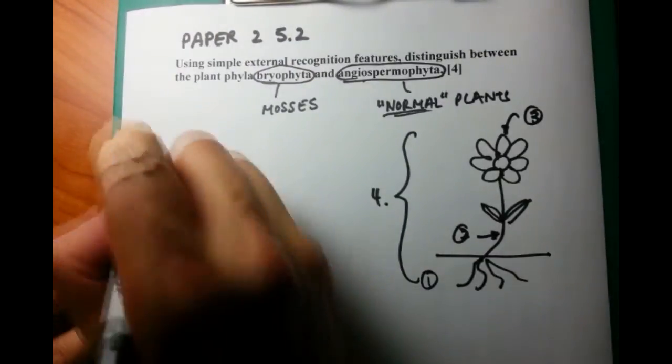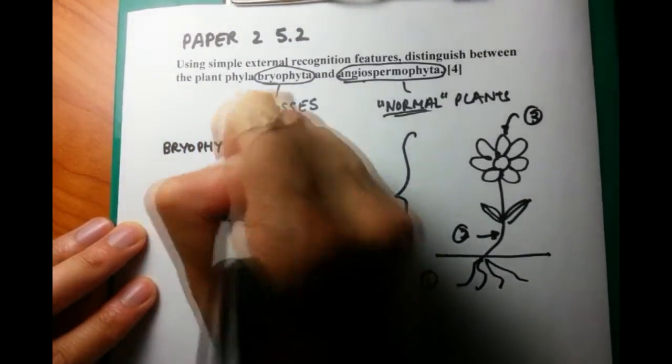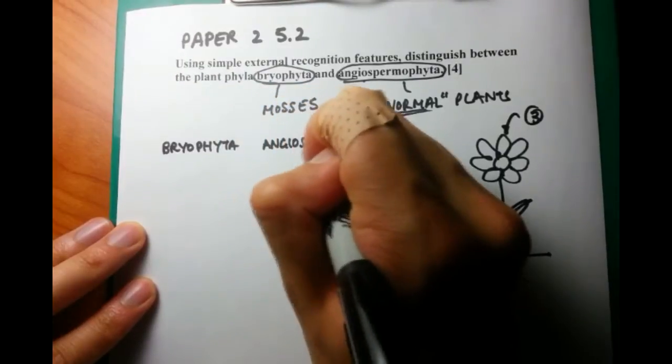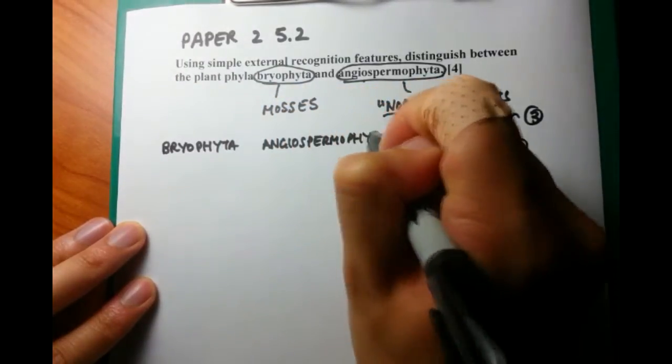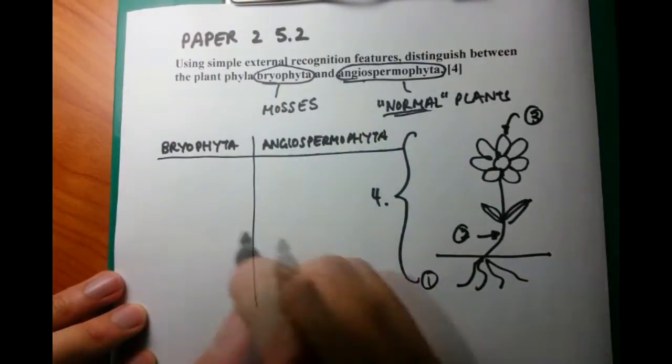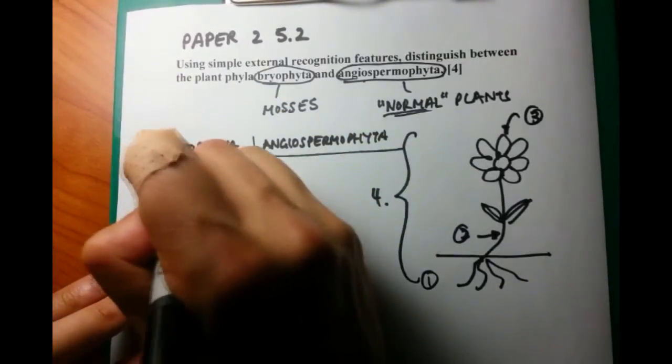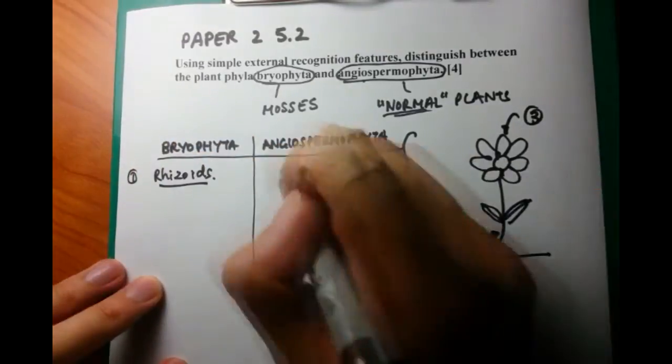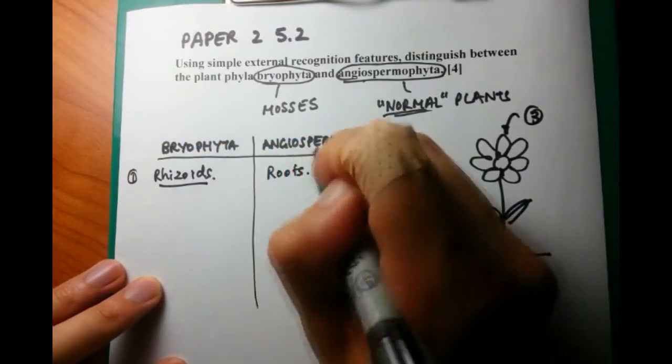Let's talk about our first thing, the roots. Bryophyta don't actually have roots, but they have root-like structures called rhizoids. Whereas Angiospermophyta do contain roots. These roots are well-developed and move water from inside the soil up into the plant itself.